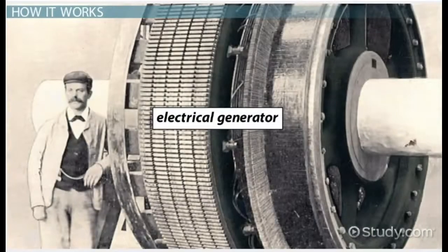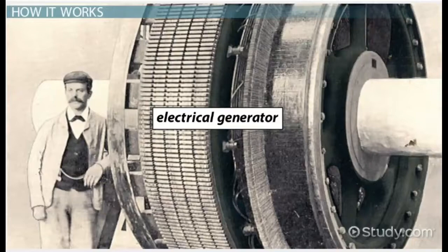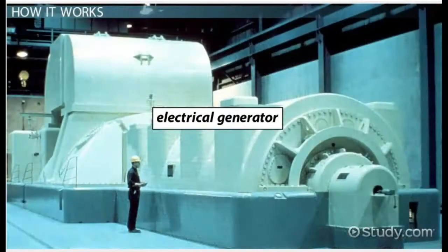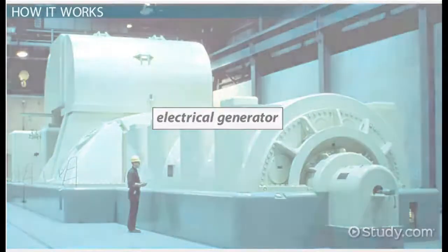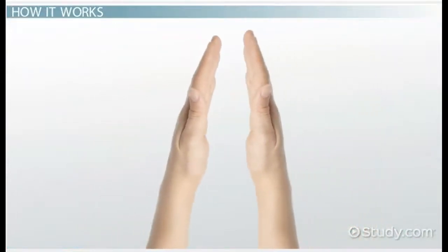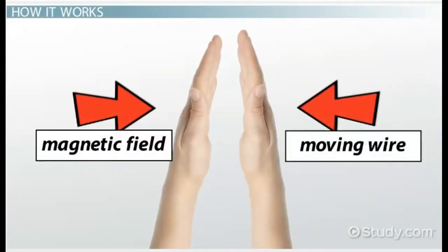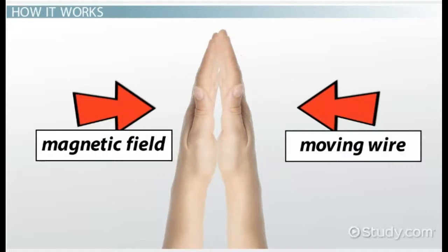Basic electrical generators convert motion into electricity, the same way we convert our clapping motion into sound waves. To make sound wave energy, we need the movement of our two hands coming together. To make electrical energy, the generator needs a magnetic field and a moving wire to come together.